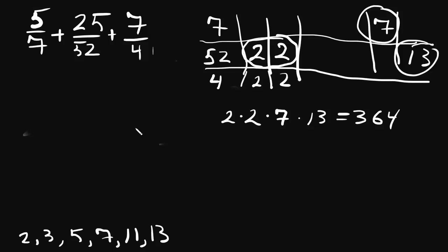So we're going to want to make 364 the denominator of all of these fractions. To make that happen for 5/7, well, we know that 364 is made when we multiply 7 by 2 times 2 times 13. And 2 times 2 times 13, if you put it in your calculator, is going to end up being 52.